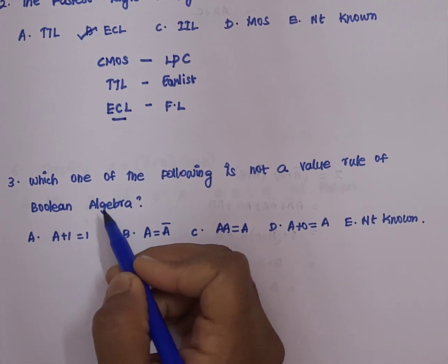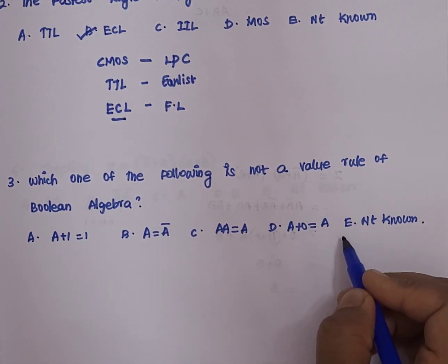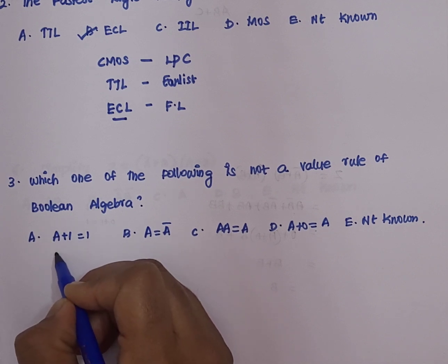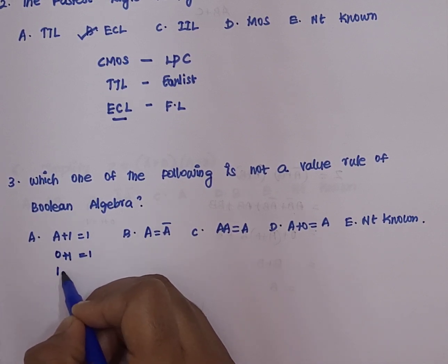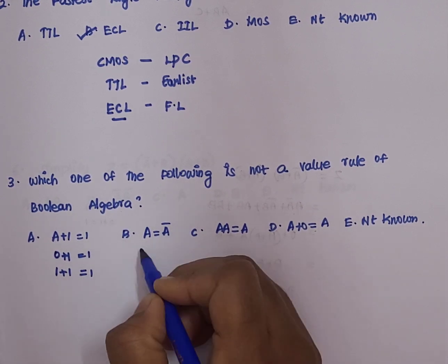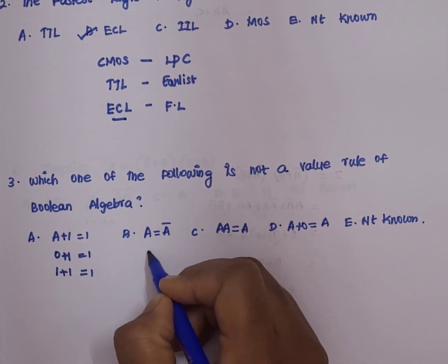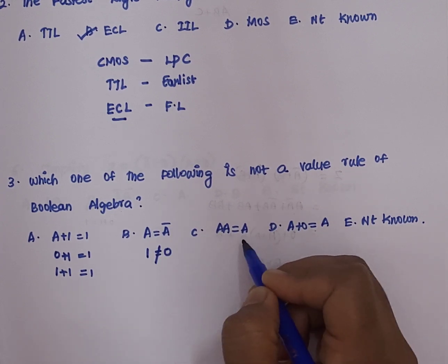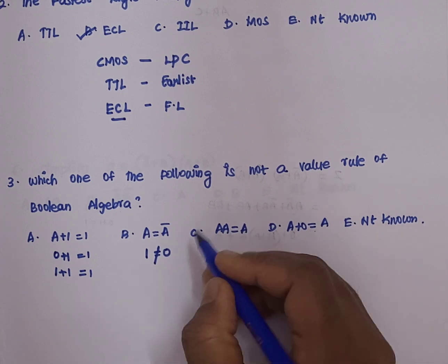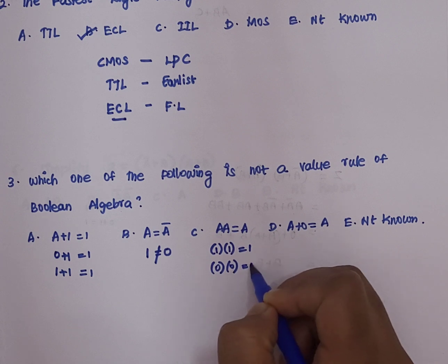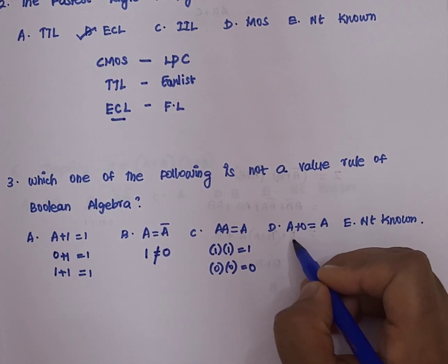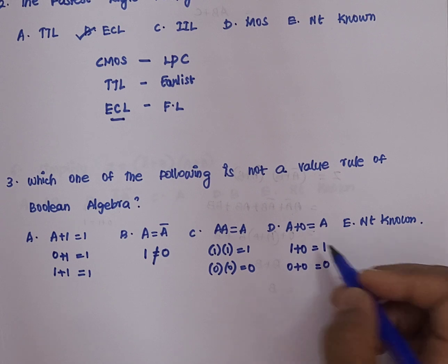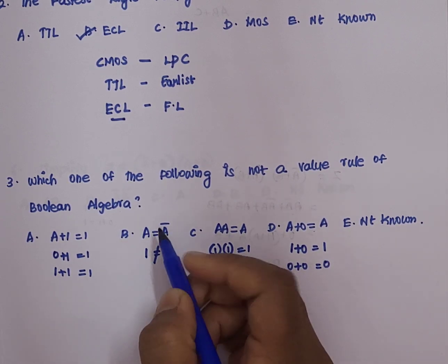Question 3: which one of the following is not a valid rule of Boolean algebra? We have a set of Boolean algebra rules and must pick which is not valid. Option A: a plus 1 equals 1. If a equals 0, then 0 plus 1 is 1; if a equals 1, then 1 plus 1 is also 1 — correct. Option B: a equals a-bar. If a equals 1, then a-bar equals 0, which is not equal — so B is contradictory. Options C (a·a = a) and D (a + 0 = a) are also verified as correct.